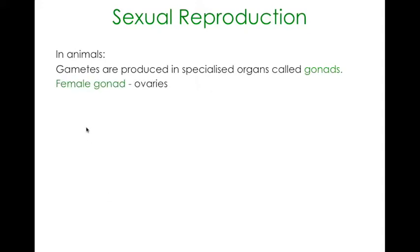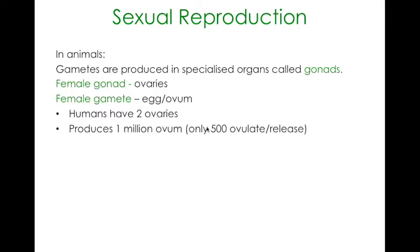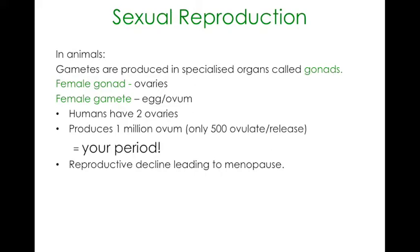The female gonads are called the ovaries and the female gamete is called the egg or ovum. Humans have two ovaries and the ovaries will produce roughly about one million ovum. However, of those one million, only about 500 will ovulate or be released during the reproductive lifetime of a female - that works out to about one every month. The reproductive decline eventually leads to menopause, when the female is no longer able to reproduce sexually because she has run out of eggs. A female is actually born with a set number of eggs and doesn't produce new ones.